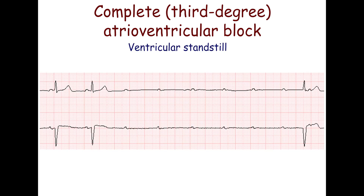If no escape rhythm occurs during complete atrioventricular block, ventricular standstill and ventricular asystole will result. This ECG strip shows complete atrioventricular block leading to ventricular standstill. The first two QRS complexes are of sinus origin with normal PR intervals, followed by six non-conducted P waves and a pause of 5.6 seconds. The last QRS complex is of junctional origin. This is one of the most life-threatening rhythm abnormalities.